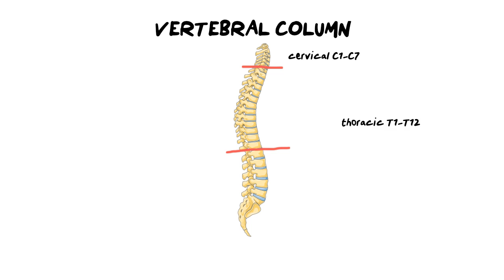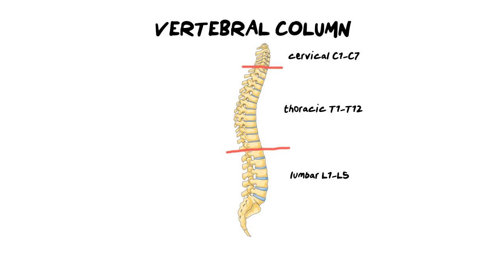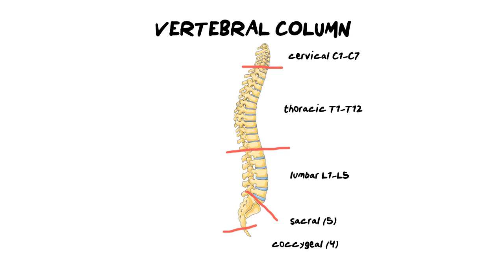Then below that you have the lumbar region, which has your biggest vertebrae. Then you have the sacral bones — there are five of them, sitting at an angle. And then this tiny little bone right at the bottom is your coccygeal bone, made up of four bones. The sacral and coccygeal bones are fused together, so we count them as single large fused bones.